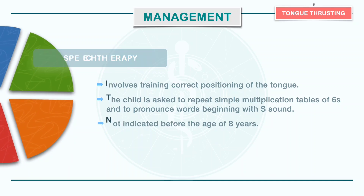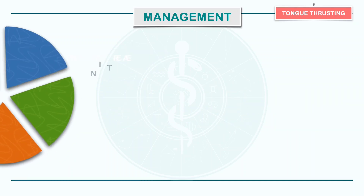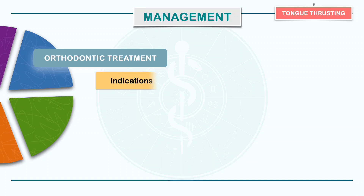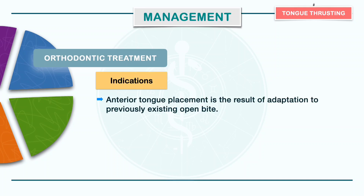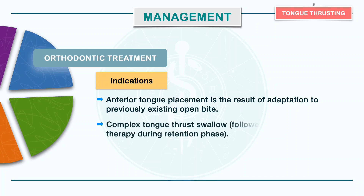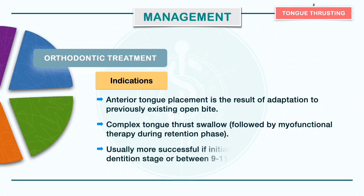Coming to orthodontic treatment, it is recommended when the anterior tongue placement is the result of adaptation to a previously existing open bite and in cases of complex tongue thrust swallow. It is usually more successful if initiated during the early mixed dentition stage or between 9 to 11 years.